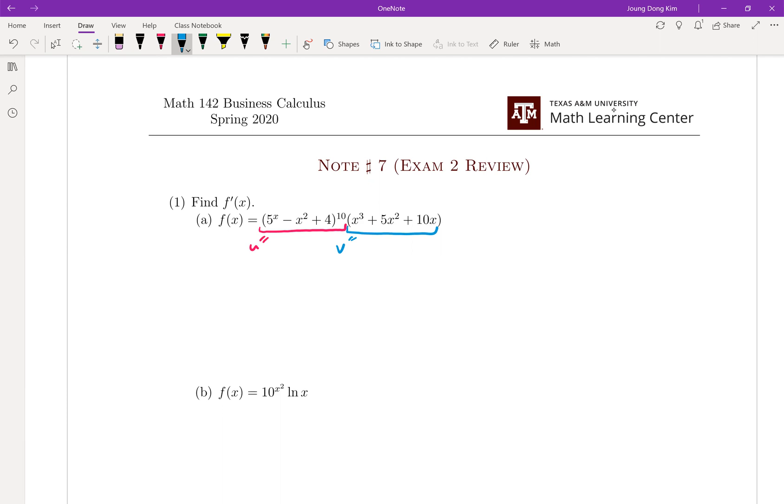Then we have to use the product rule, which is u' times v plus u times v'. Now we're going to try to find the pieces for this puzzle: u' and v'.